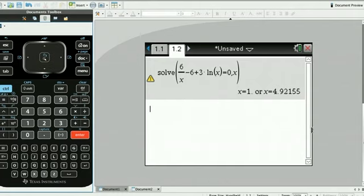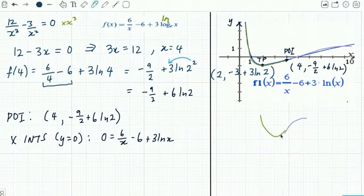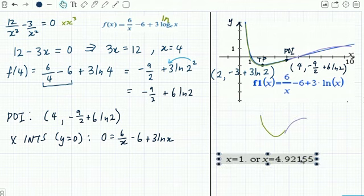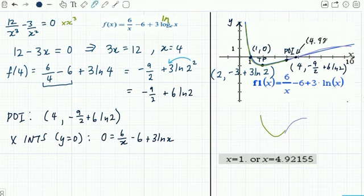Those are my two intercepts. Look and make sure they make sense in your graph, and you can see that they do. There's an intercept at (1, 0) and another intercept here at approximately (4.92, 0).